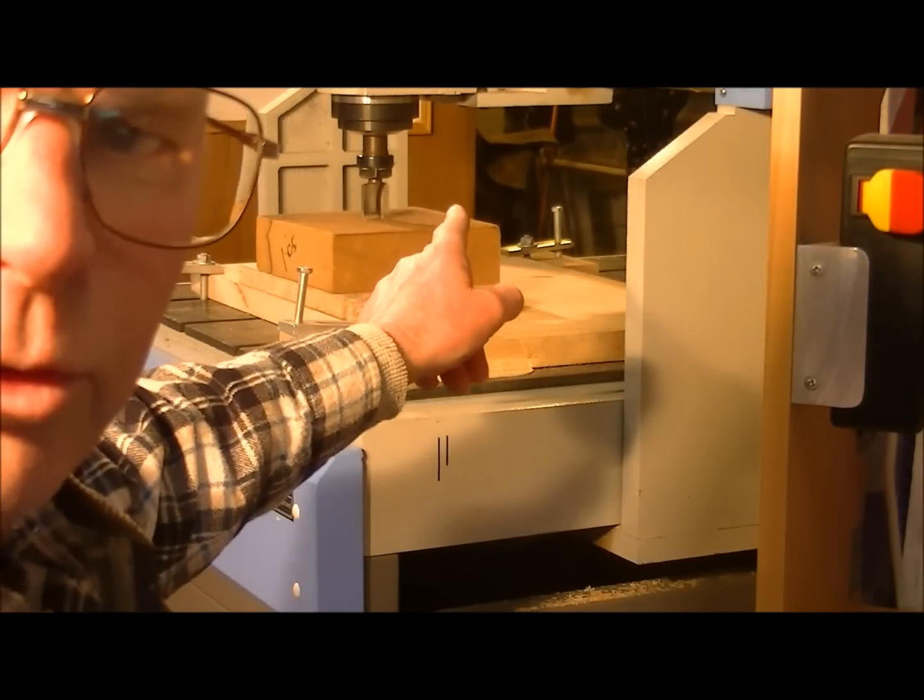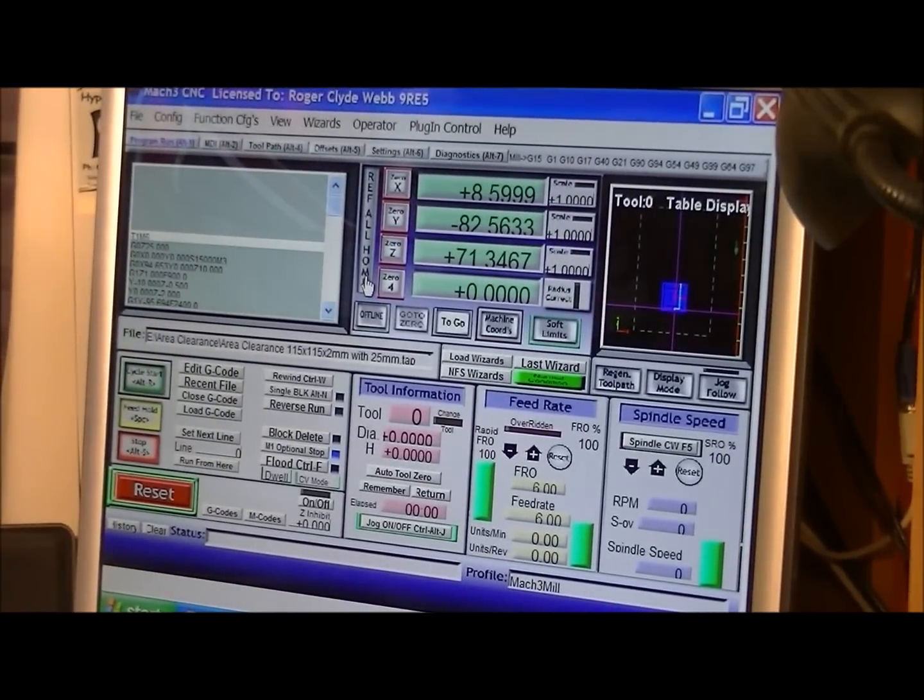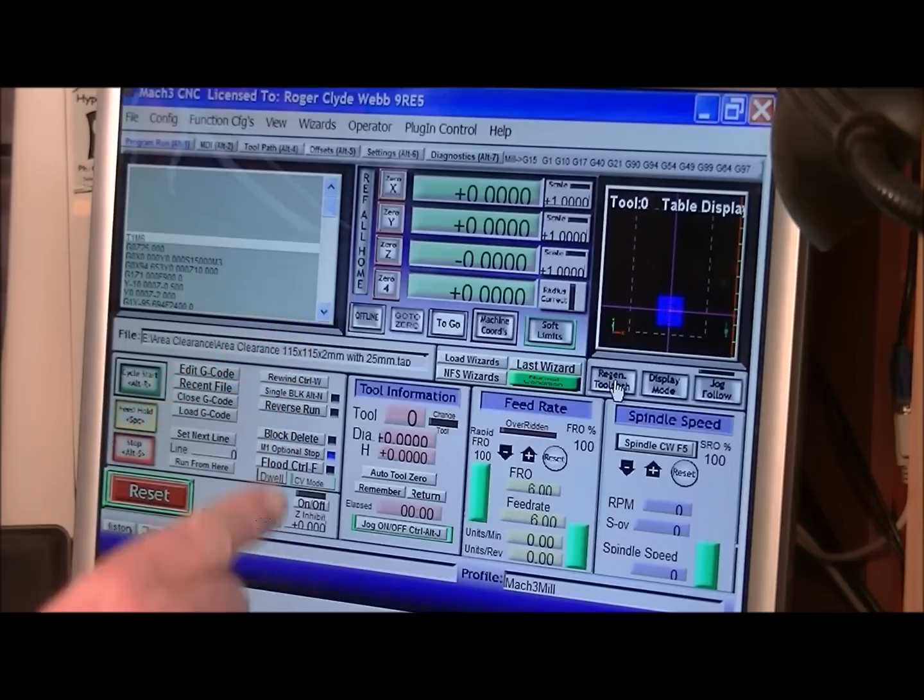Okay. So I've just got the tool centered over the material. It's just touching it. So now I can set the zero position in Mach three by going click, click, click. And then regen tool path, which then puts the material right where it should be.